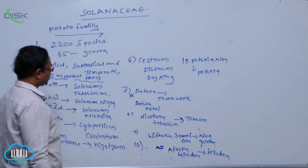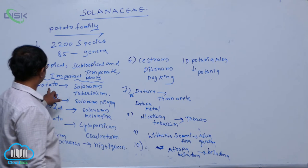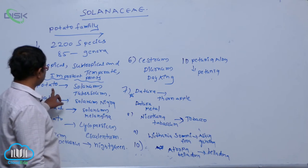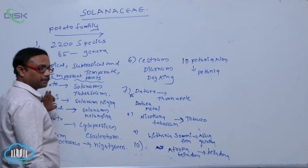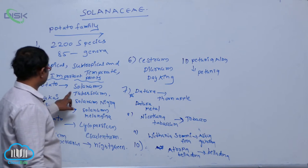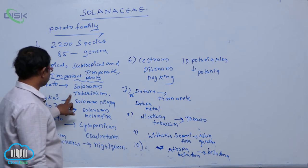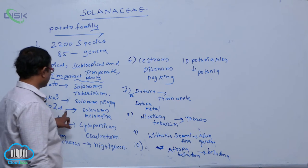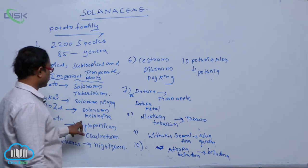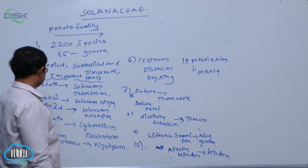In the economical importance of plants, Potato, Solanum tuberousum, Brinjal, Solanum melangina, and Tomato, Lycopersican Esculentum. These three are used as vegetables.